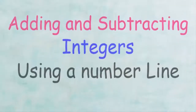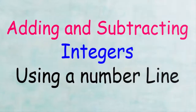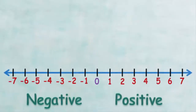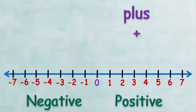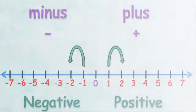Hello and welcome to the All Proof Learning channel. In this video, we explain how to add and subtract integers using a number line. Remember that when we make addition using a number line, we make forward jumps, and when we make subtraction using a number line, we make backward jumps.